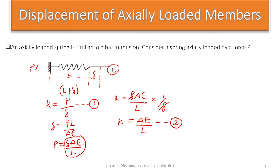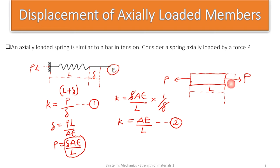The same thing happens to axially loaded bars. If I have a prismatic bar loaded with a force P in tension, we know the original length L. As soon as this force is applied, it is going to elongate the material. The total length now is the original length plus the deflection δ, and we can calculate the deflection as δ = PL/AE — force times length over area times Young's modulus.